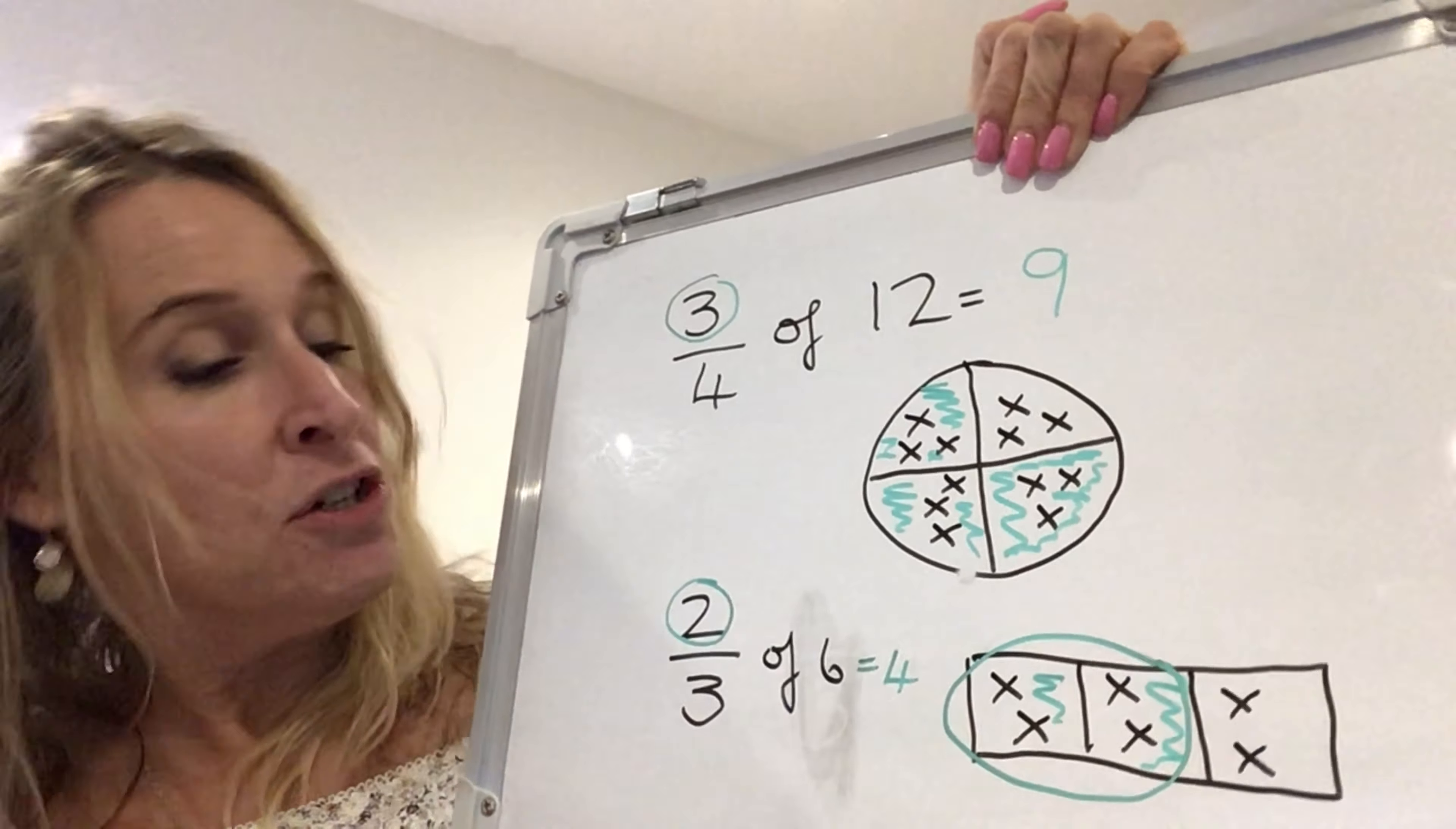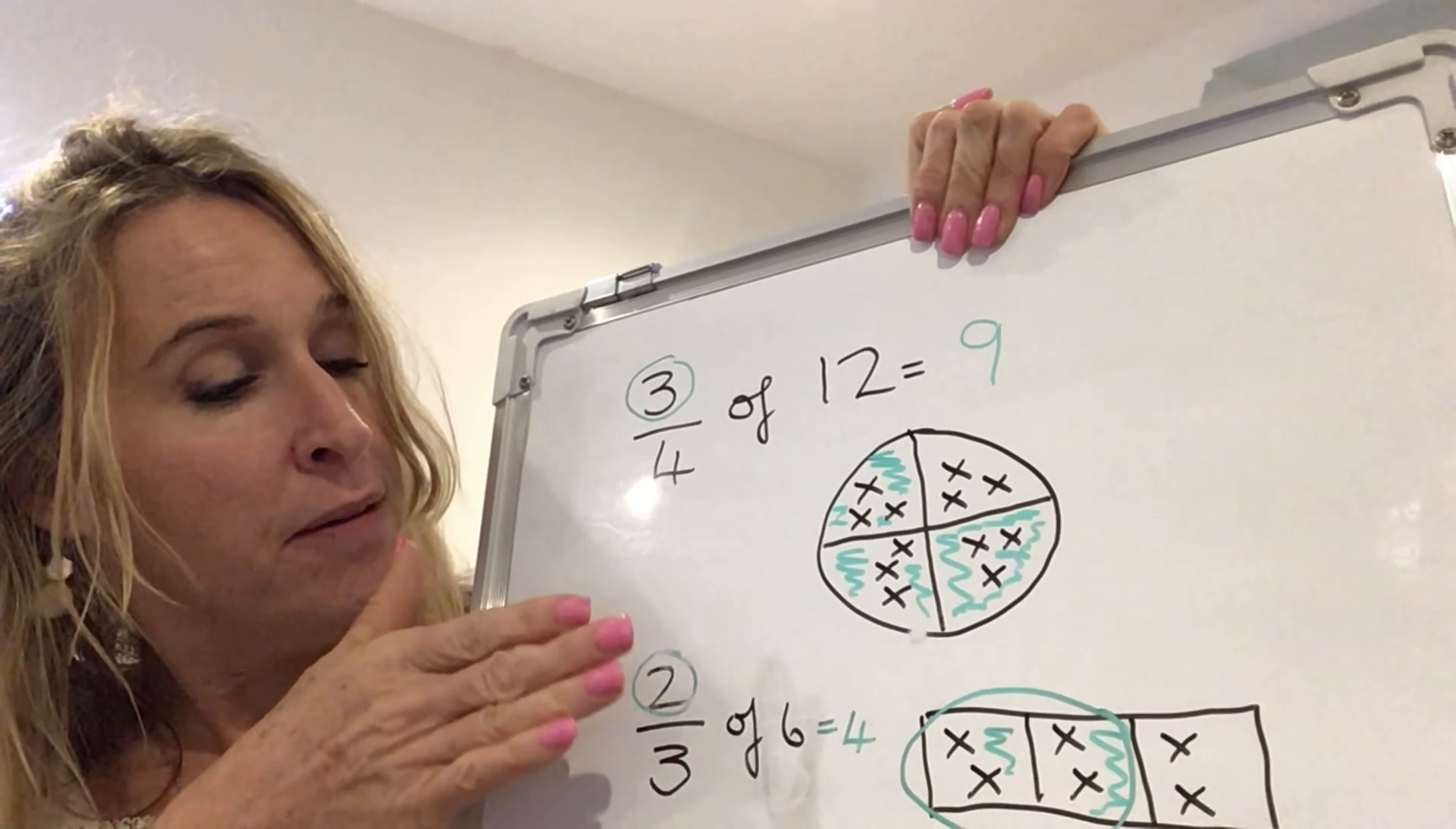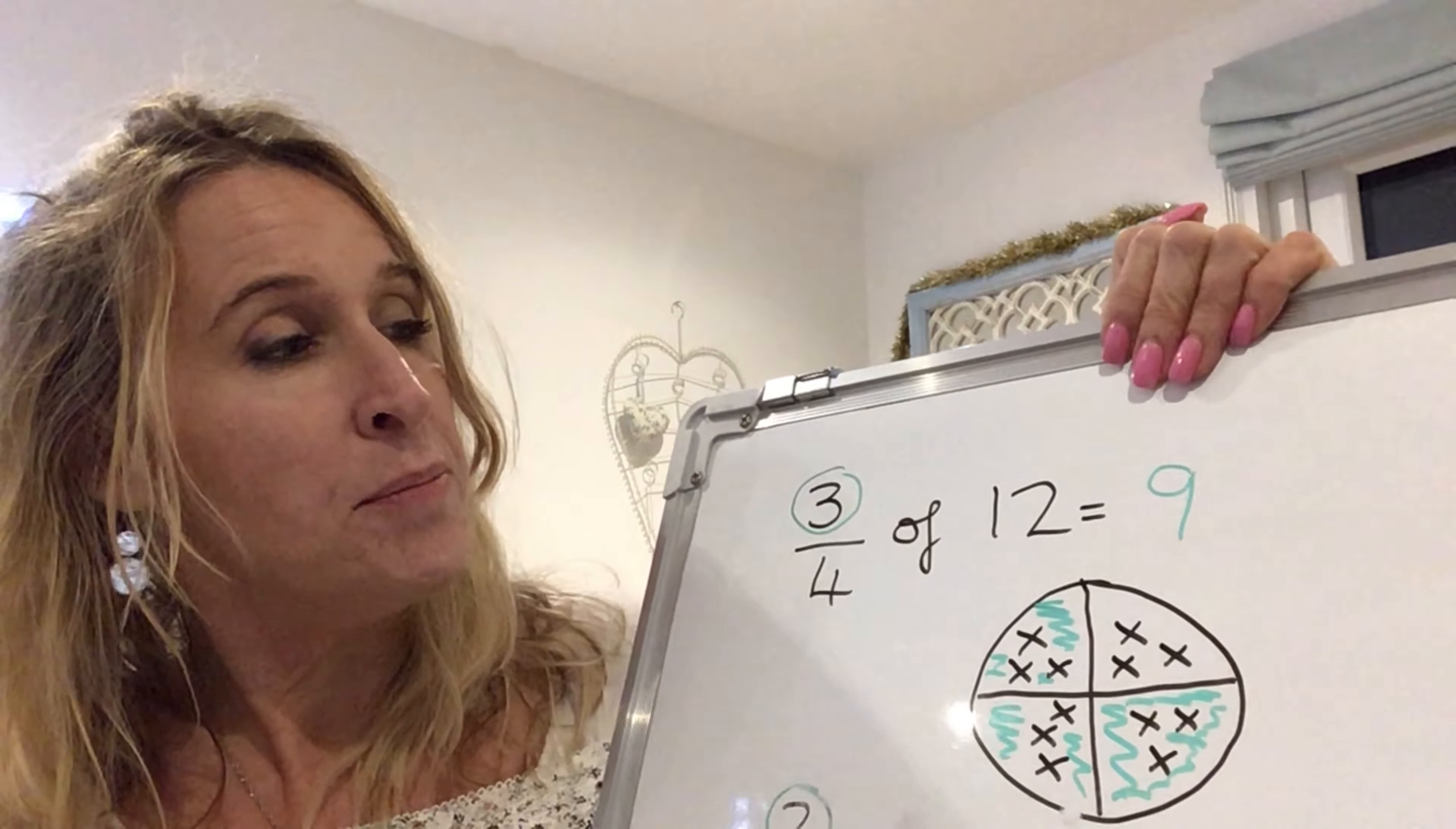Now, sometimes when I'm teaching children, we actually get a post-it and we cover this top number up because first thing is that we're going to draw the boxes and then we're going to share out the crosses. The top number, the numerator does not matter until right at the end when we count the crosses in those two boxes. So that's another way to do it so that they really get the kinesthetic way of learning that we're actually going to cover that up. We really don't need it yet and they don't get confused by that top number.